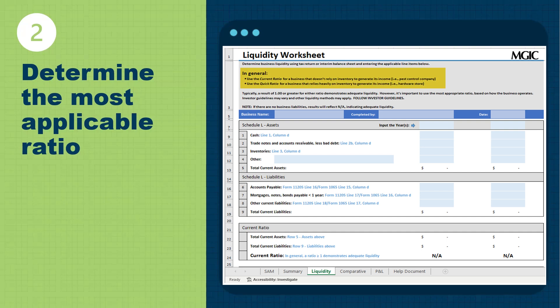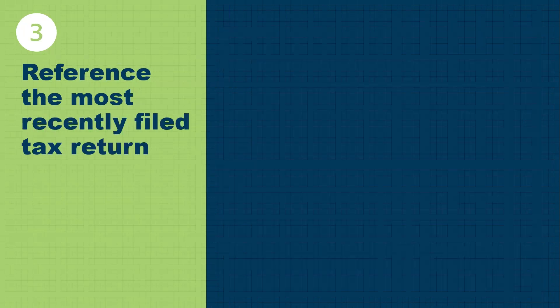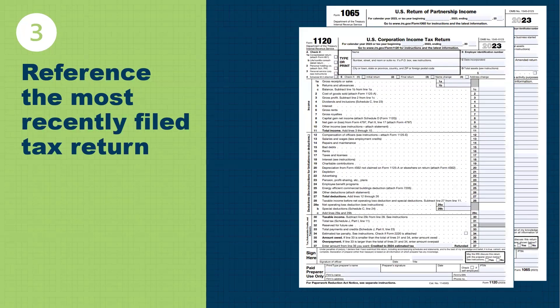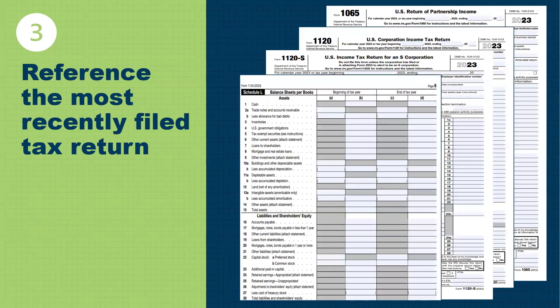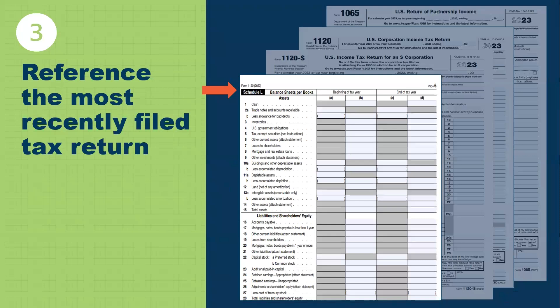If you need a reminder, there is a section at the top of the liquidity worksheet that gives examples of what ratio you should consider. In step three, we're going to reference the most recently filed tax returns and turn to Schedule L, which is the balance sheet for the business. We will look at the last column, column D, which gives us a snapshot of the business as of the end of the tax year. Generally, only one year of tax returns is needed to complete a liquidity test. However, if you want to investigate business trends, you can complete two years and analyze liquidity trends.